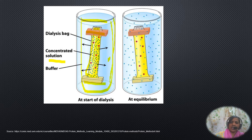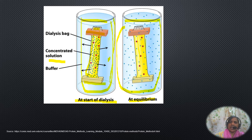At the start of dialysis and in the equilibrium stage, all the small molecules would have moved into the buffer, whereas the large molecules which cannot pass through the semi-permeable membrane stay inside. High molecular weight particles like starch, polysaccharides, proteins, or fats will all be retained inside. Dialysis is one of the commonly used laboratory techniques to remove small molecules from macromolecules.